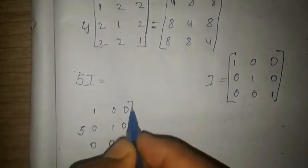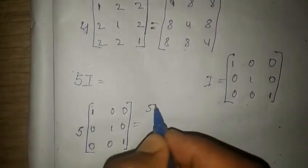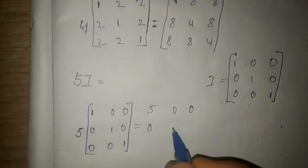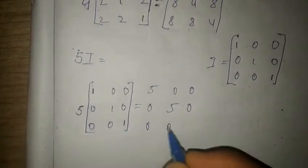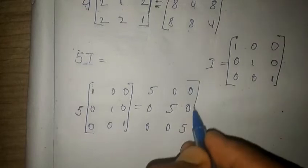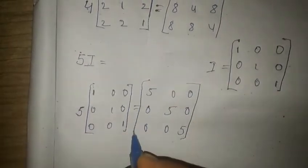Multiplying 5 by the identity matrix: 5×1=5, 5×0=0, 5×0=0, 5×0=0, 5×1=5, 5×0=0, 5×0=0, 5×0=0, 5×1=5. So 5I = [[5,0,0],[0,5,0],[0,0,5]].